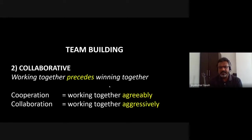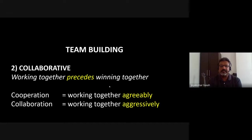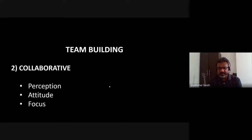The second essential quality is being collaborative, which means working together. If we're dragging our feet, saying 'I don't like that person' or 'he didn't do it last time so I won't either,' all those petty things prevent effective working together. Working together always results in winning together, but working together must happen before we start winning together. Cooperation means working together agreeably; collaboration is working together with passion and urgency — working together aggressively.